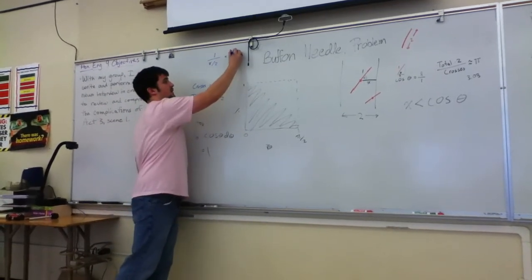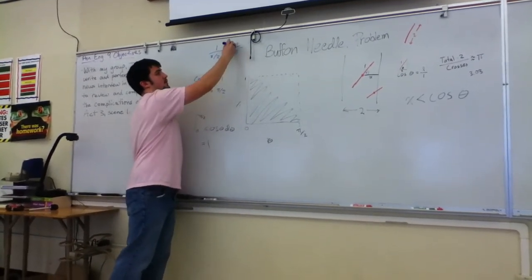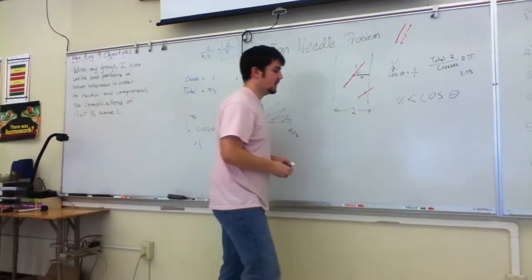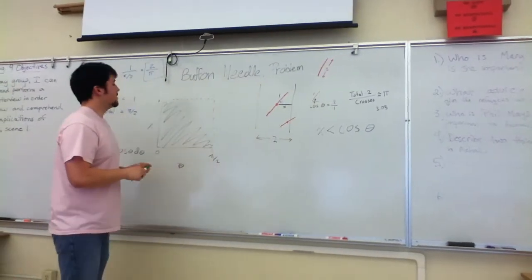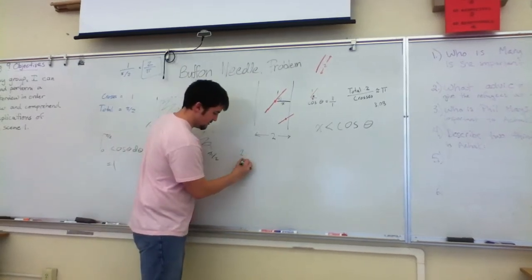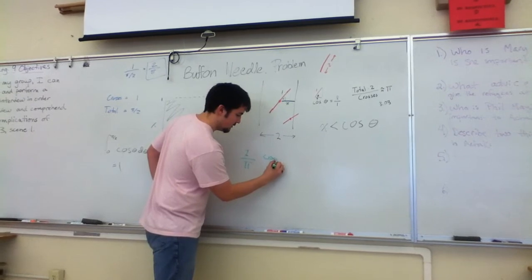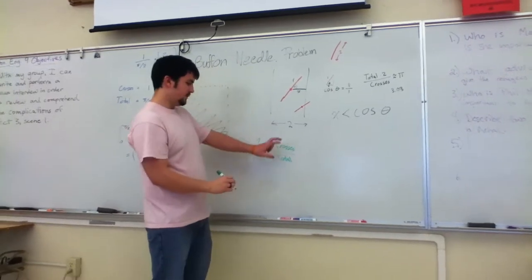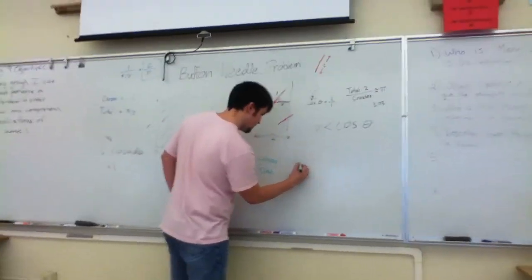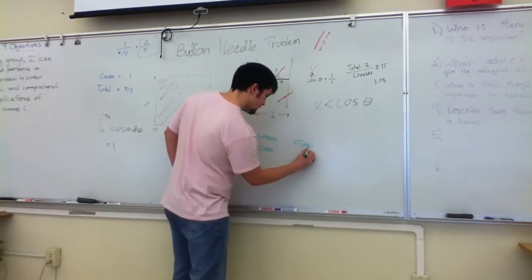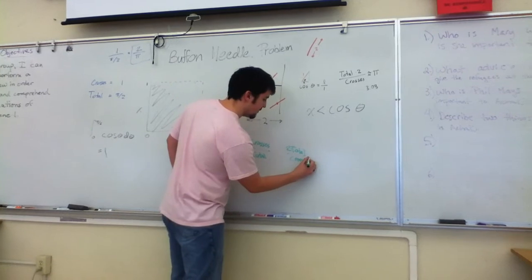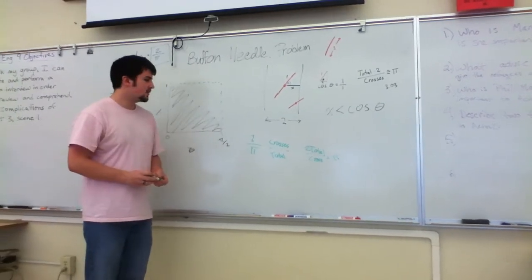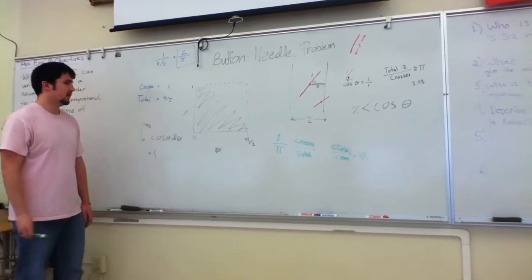Which comes out to be your probability of having a cross is 2 over pi. But the idea is, if 2 over pi is the crosses over the total, if you were to flip this and multiply by 2, you would get pi. Black magic to be sure. But that's the idea behind Buffon's needle problem.